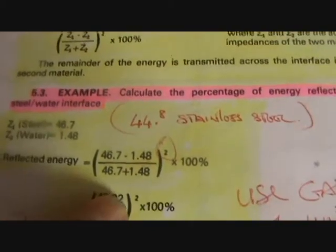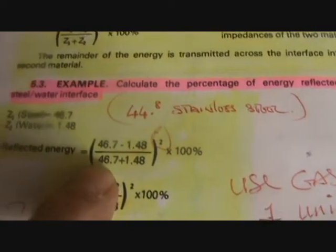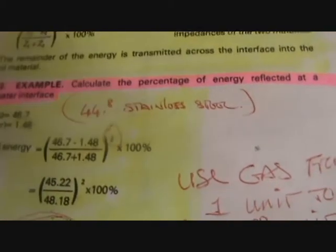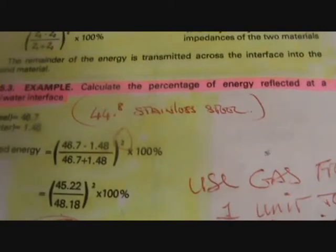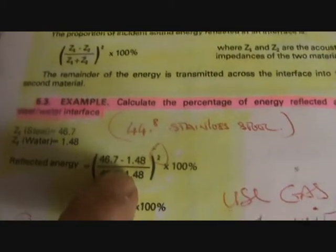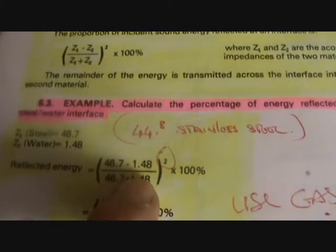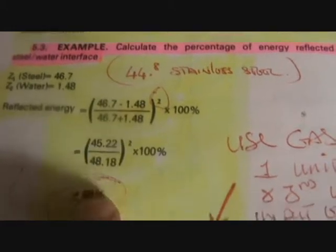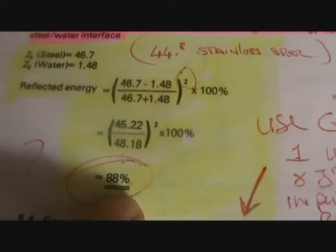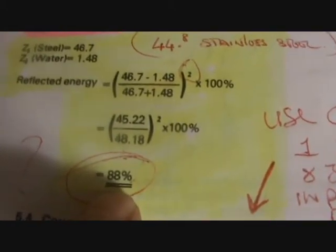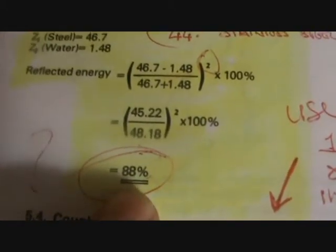If we just look at the basic values here — steel and water — it's a reflected energy times 100% squared. So we take the values given and we can end up with an impedance of 88%.